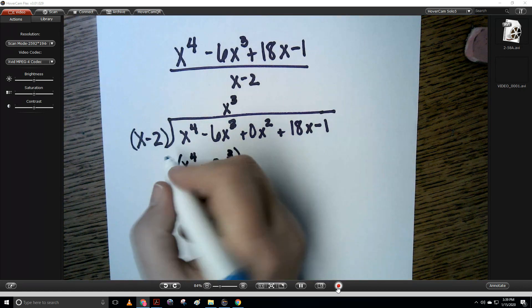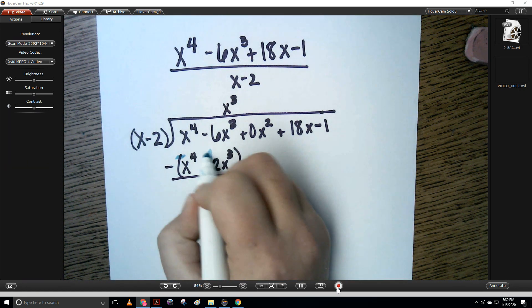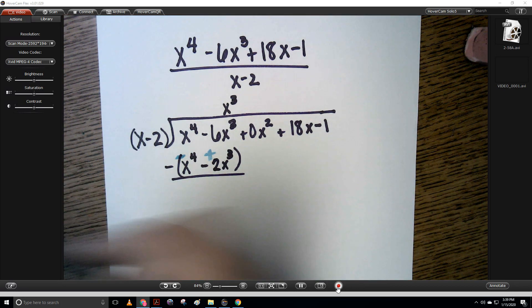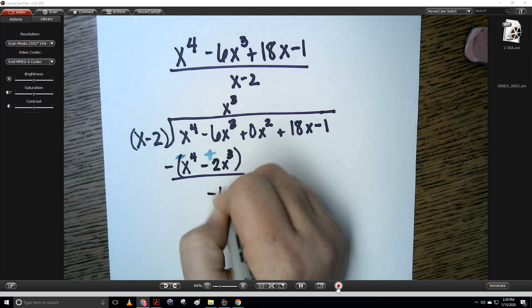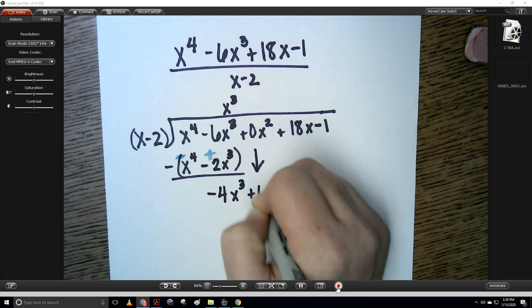So this is going to be negative x to the fourth, and this is going to be a positive 2x cubed. So when I add these together, I get negative 4x cubed, and then I'm going to bring down.